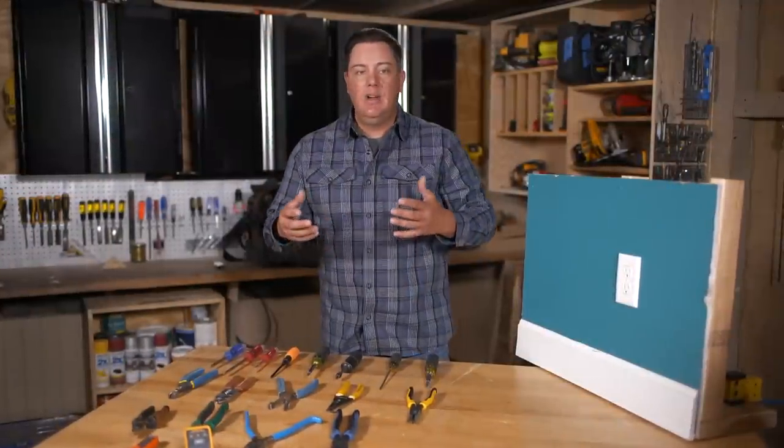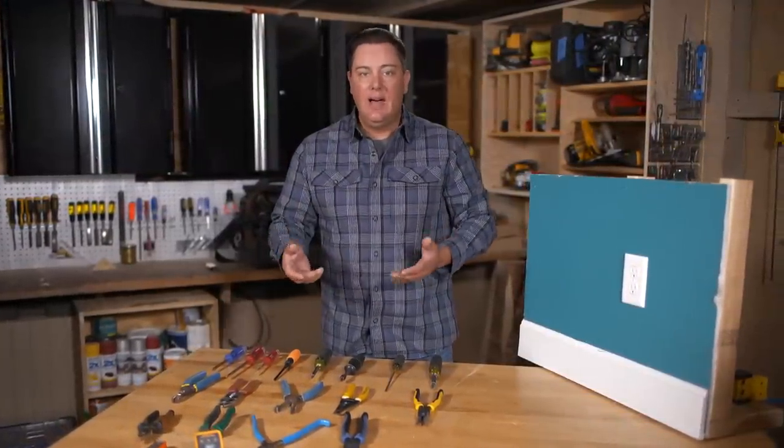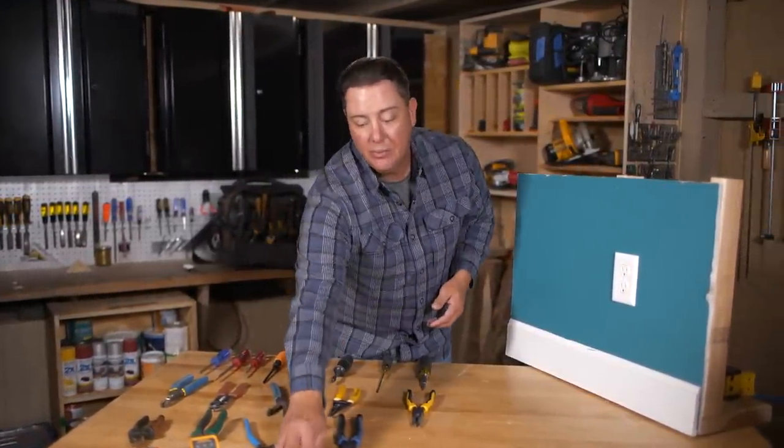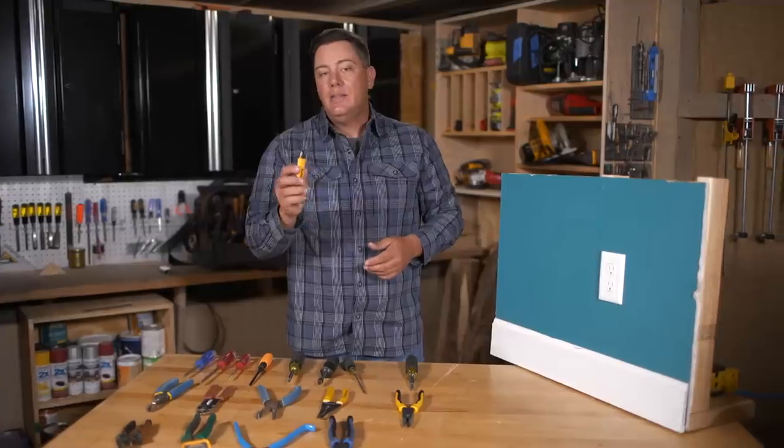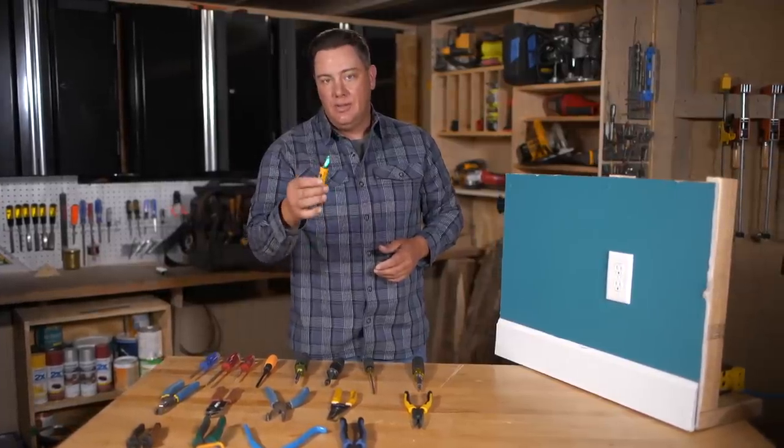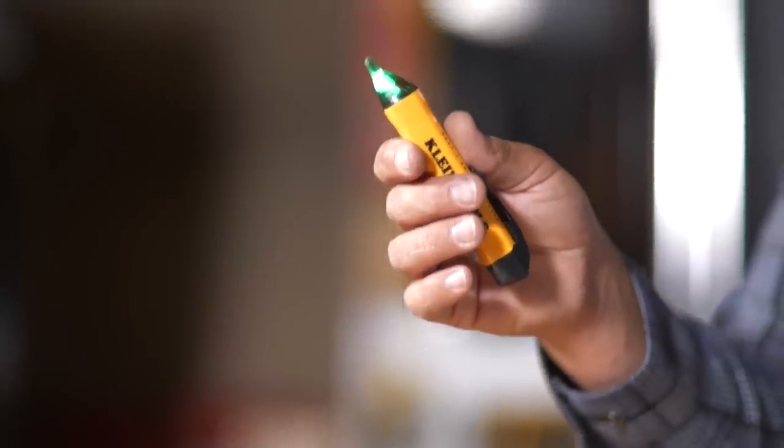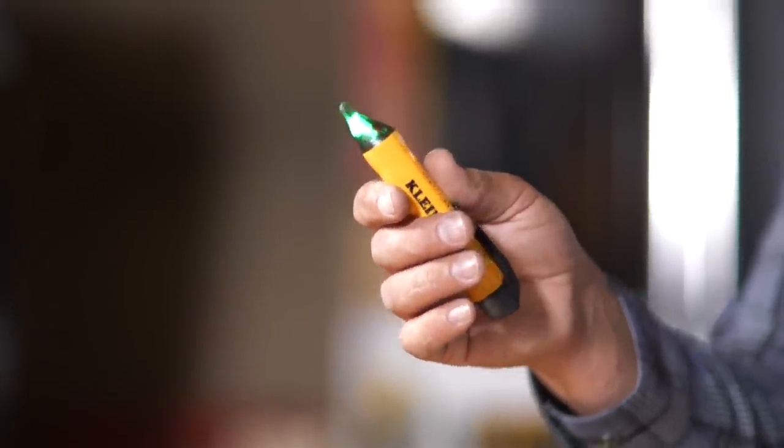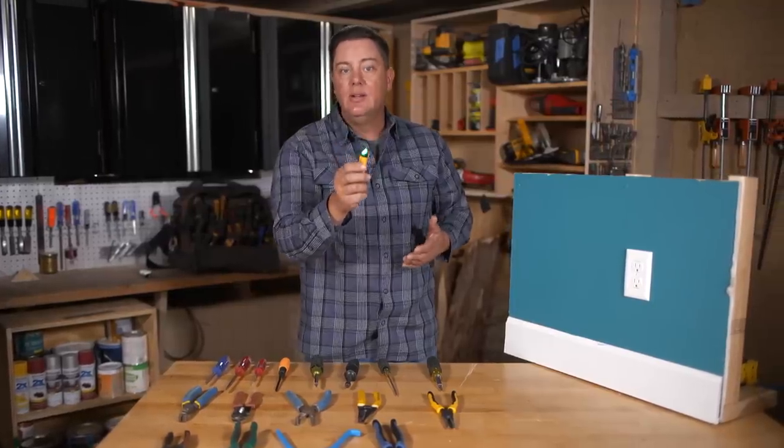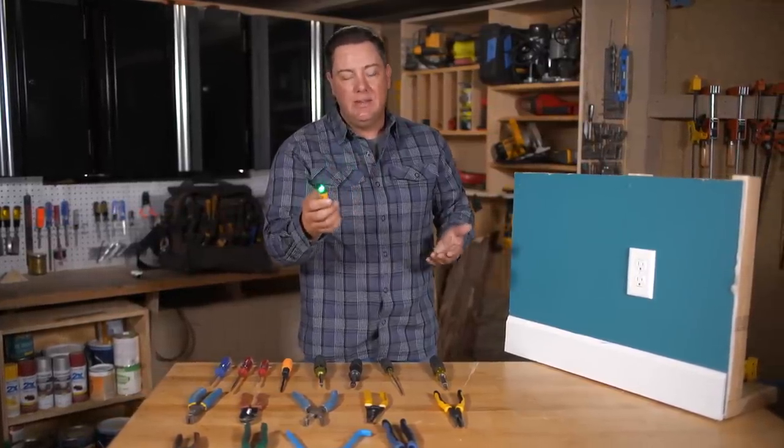If you're working on a wire you're tracing out, you're not sure if it's live, or a light fixture even if the bulb's out, you can use a non-contact tester. Turn that on. If it's just the green light, no power. If you touch the wire or pull it up to the side of the wire and it starts to chirp and turns red, it means it still has power there.